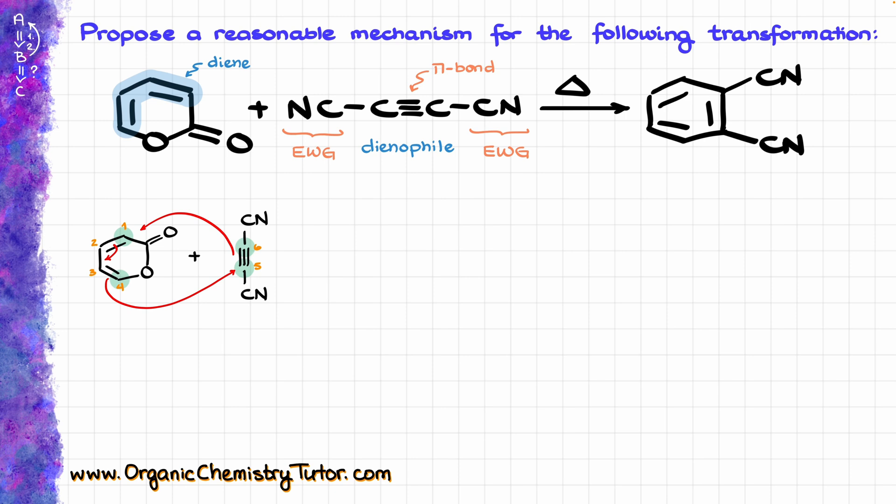And because our diene is a cyclic molecule to begin with, we are going to end up with a bicyclic molecule as the product of this reaction. So in order to draw that product, what I'm going to do here, I will actually start by drawing this stem for the bicyclic molecule. So I'm going to draw a couple of bonds here, then a couple of bonds underneath, there will be a double bond over here, double bond over here, two bonds going up, there will be an oxygen over here, and a carbonyl like that.